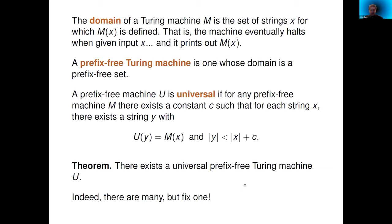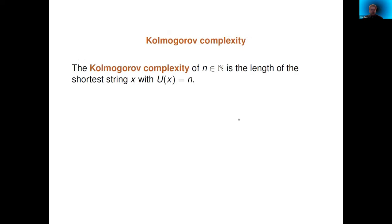Any normal programming language you would use acts like a universal prefix-free Turing machine. The bound says that for any reasonable computer language, the difference in program lengths between my language and yours is bounded by a constant. The Kolmogorov complexity of a natural number n is just the length of the shortest string x with U(x) = n — in common parlance, the length of the shortest program that prints out that number.